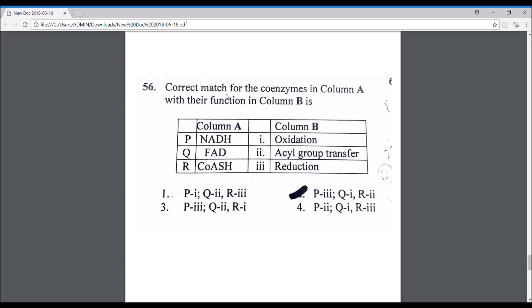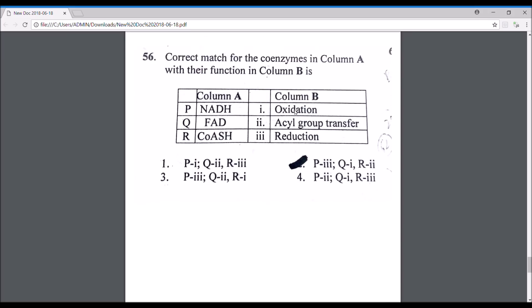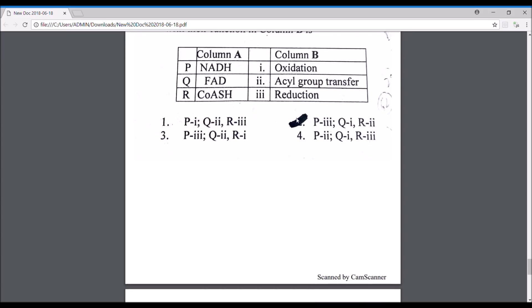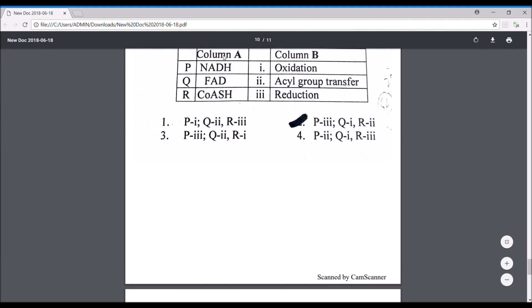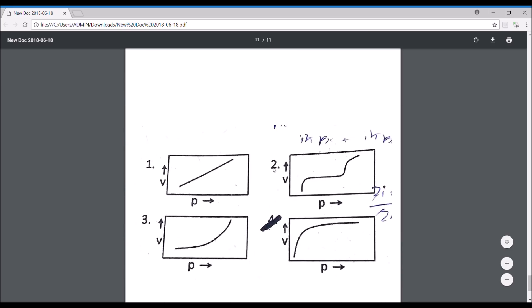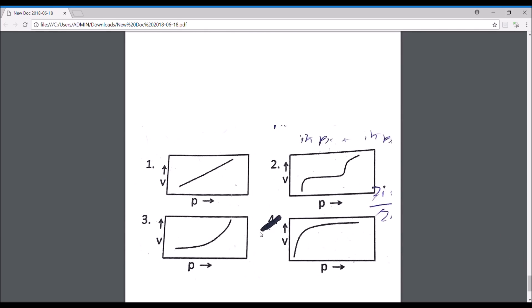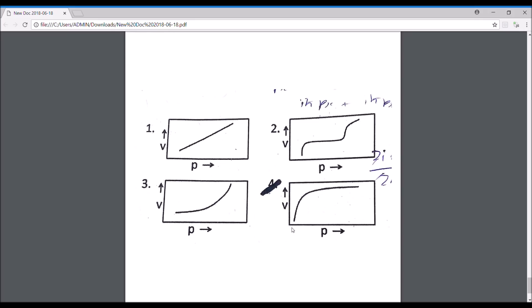Correct match for the coenzymes in column A with their function in column B, the correct answer is option number two. So basically, NADH leads to your reduction, FAD leads to oxidation, and coenzyme A basically has the function of acyl group transfer. From fatty acids, it transfers the acyl group. This was a question for Langmuir absorption: what is the correct graph for the Langmuir isotherm? This is the correct graph, option number four.